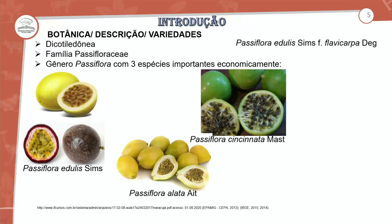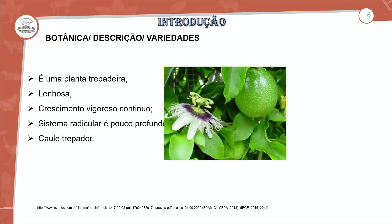Na introdução, temos a descrição botânica: o maracujá é uma dicotiledônea pertencente à família Passifloraceae, gênero Passiflora, com três espécies importantes economicamente — Passiflora edulis, Passiflora cincinnata master e Passiflora alata. Em relação às descrições, é uma planta caracterizada como trepadeira, lenhosa, de crescimento vigoroso e contínuo.